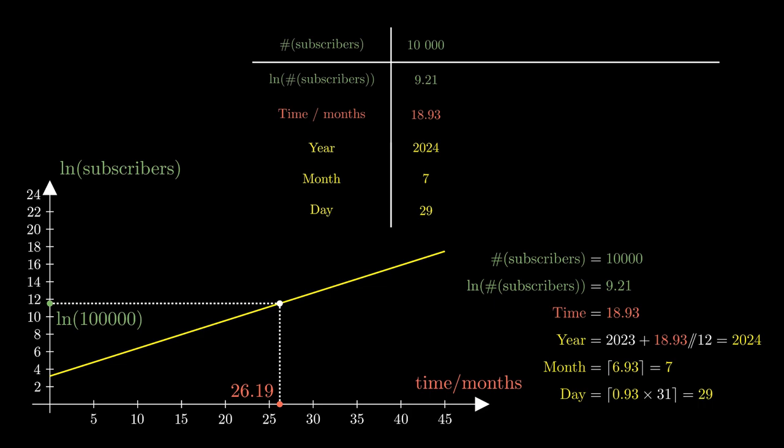Processing this data, the year that we obtain is 2025, the month we obtain is 3, and the day we obtain is 6, which means that we predict that on the 6th of March, 2025, our channel is going to hit 100,000 subscribers.